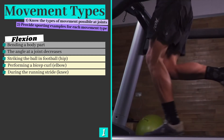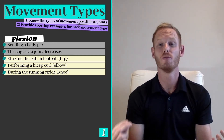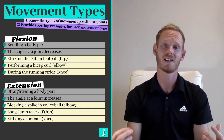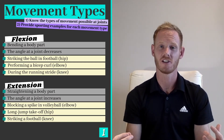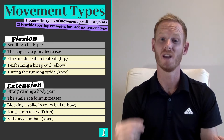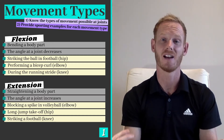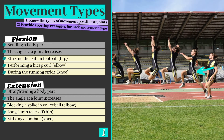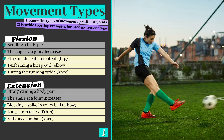Each movement type has a partner, and extension is the exact opposite of flexion. Extension means straightening a body part or increasing the angle at a joint. It can be seen at the elbow when blocking a spike in volleyball, at the hip joint when taking off in long jump, and at the knee joint when striking a ball in football.